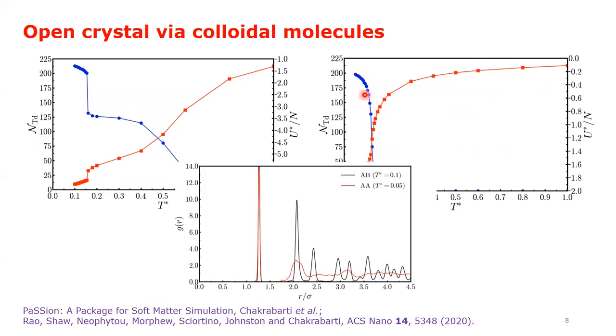The pair distribution functions for the centers of tetrahedra show that no long-range order emerges in the absence of hierarchy of interaction strengths shown in red.